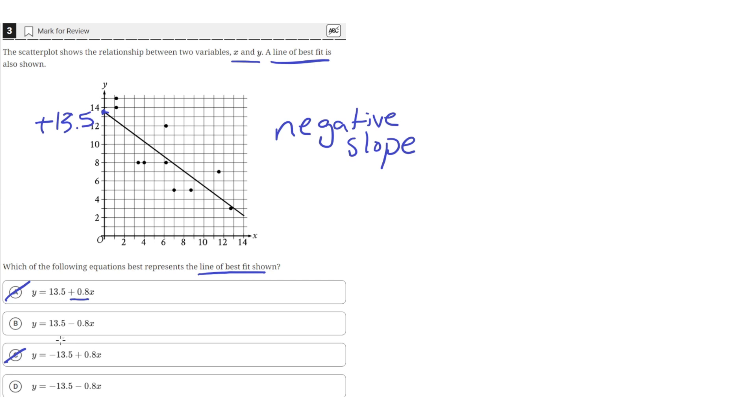So we need to find a line, either B or D, which has a positive 13.5 as the y-intercept. And we can see D does not have a positive 13.5 y-intercept because D is saying that the y-intercept is at negative 13.5, which is incorrect.